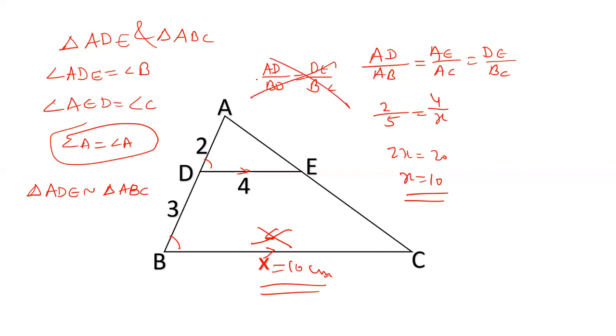So this particular relation does not hold. Only AD upon DB equals AE upon EC. If AD upon DB equals AE upon EC, that is known as Thales theorem.